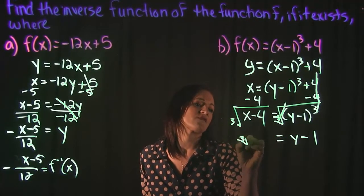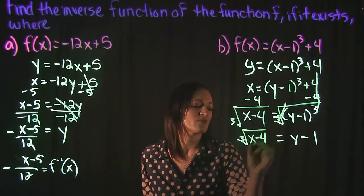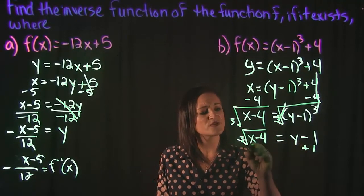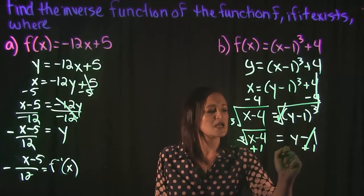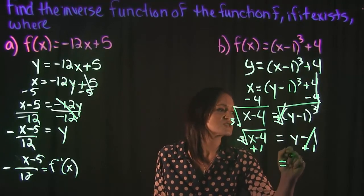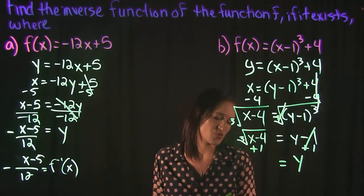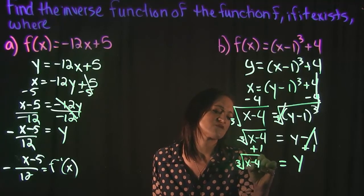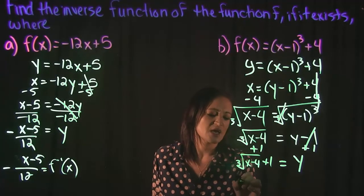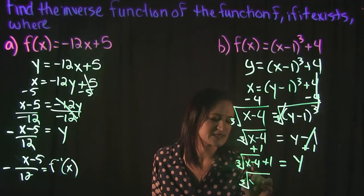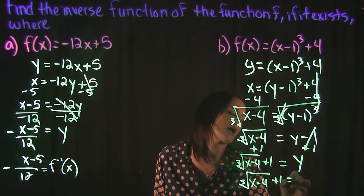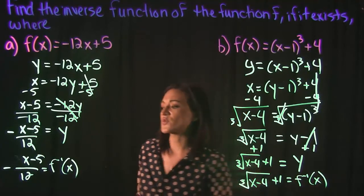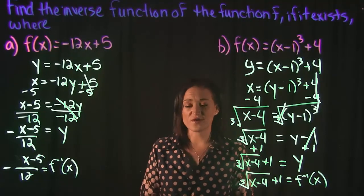That leaves us with y minus 1 on the right, and the cube root of x minus 4 on the left. Then we move the 1 over to the other side — it cancels on the right, leaving y, and on the left we have the cube root of x minus 4 plus 1. The last step is to replace y with f inverse of x. Those are the inverse functions for both examples.